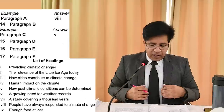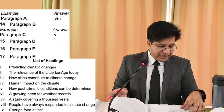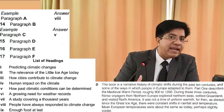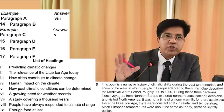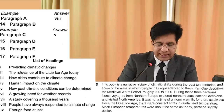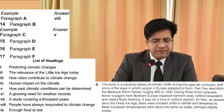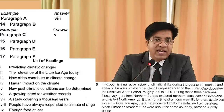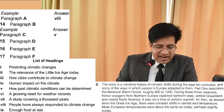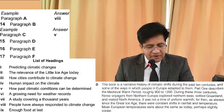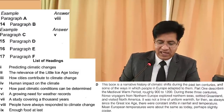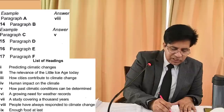For good time management, start list of headings with shorter paragraphs, as you can do them quickly. Paragraph D is short. It reads: 'This book is a narrative history of climatic shifts during the past 10 centuries.' Past ten centuries — does that ring a bell? That's heading number seven: 'study covering a thousand years.' Sometimes list of headings is as simple as this. Cross heading number seven as well.